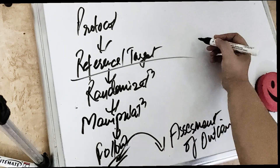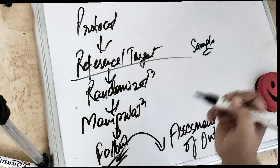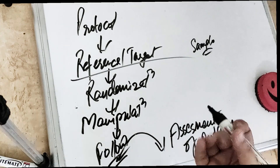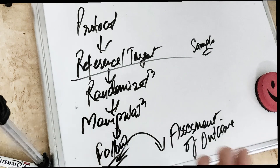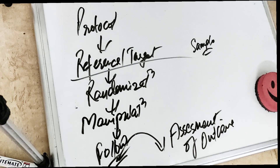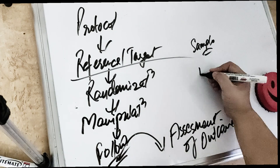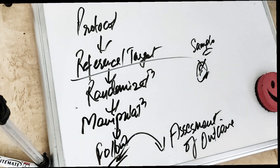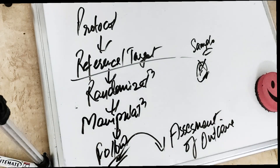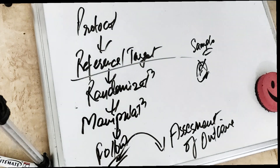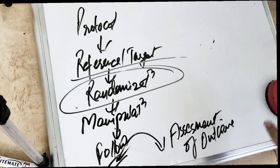The reference or target population is the sample of people on which you are going to do the experiment. From this sample, certain people are excluded — those who do not give informed consent, and those who are not eligible. For example, if you are studying fluorosis, those who don't have fluorosis will also be excluded. After exclusions, you arrive at the reference or target population.